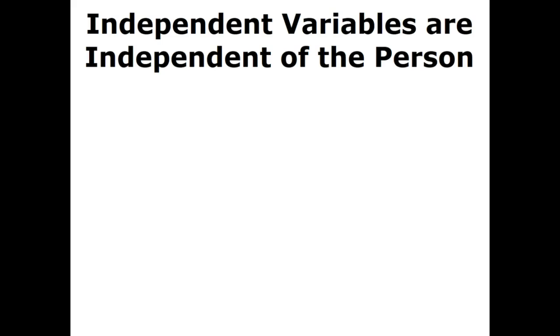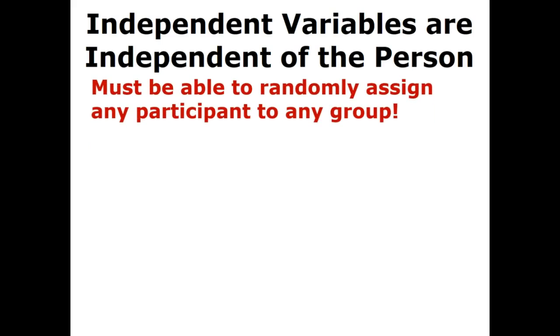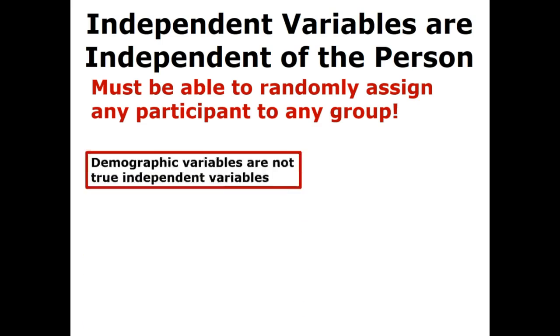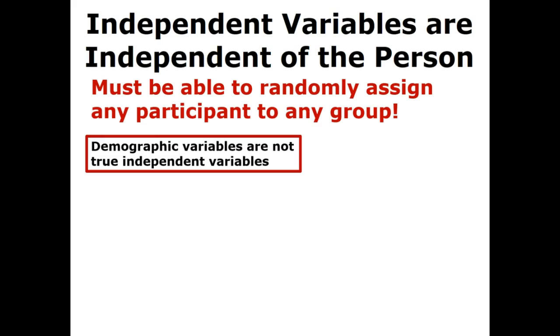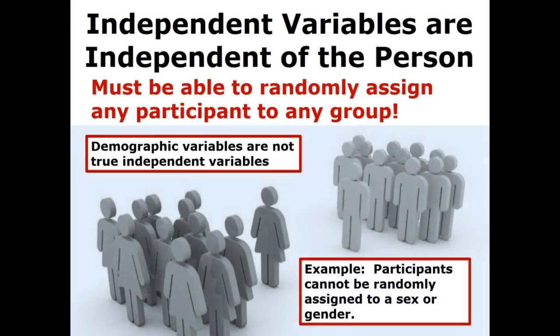It is also helpful to know that independent variables are independent of the person — they are characterized as environmental events. Researchers must be able to randomly assign any participant to any one of the groups. This means that demographic variables cannot be true independent variables. For example, participants cannot be randomly assigned to a sex or gender; they can be divided by sex or gender, but not randomly assigned. Nevertheless, researchers will often examine data by sex and treat it as if it were an independent variable — this is a more advanced topic. There is a different video on quasi-experimental methods and confounding variables. It is the use of random assignment that allows researchers to draw cause and effect conclusions with confidence.